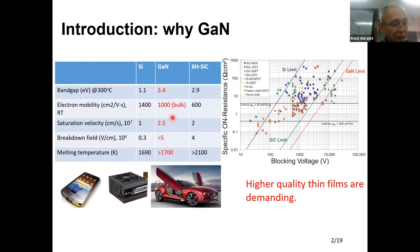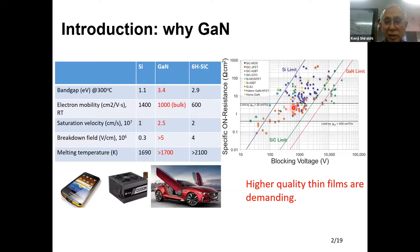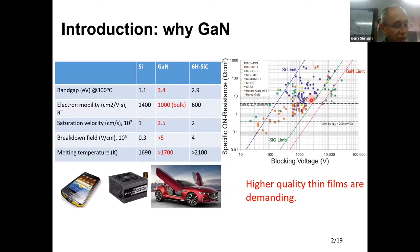A competitor may be silicon carbide, but gallium nitride has much higher mobility. This picture shows the performance of devices made from silicon, SiC, and gallium nitride. The latter data points are for gallium nitride, showing higher mobility.